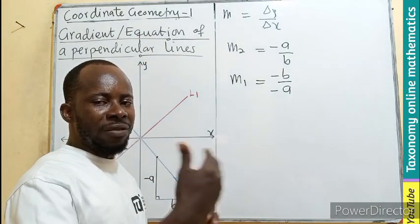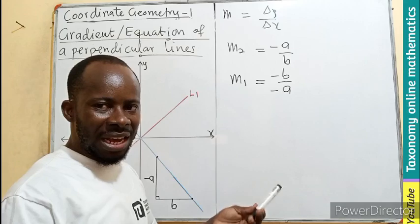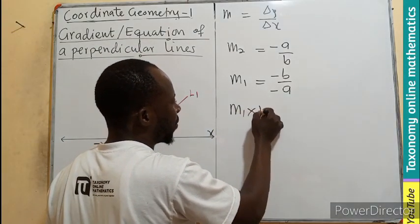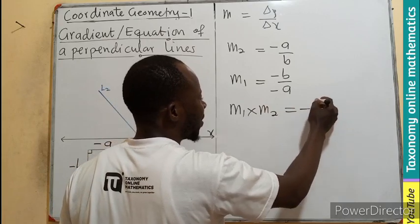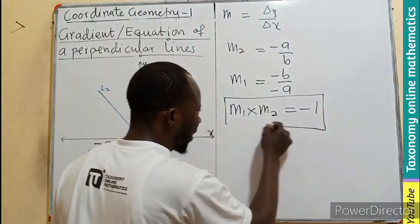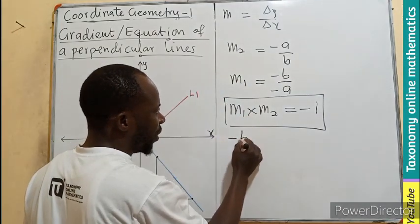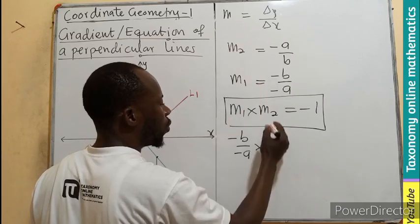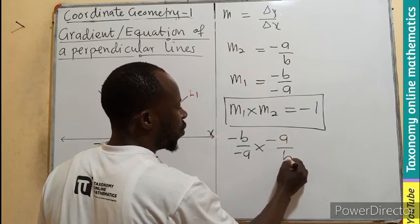So, we are still on course based on the definition of the previous episode. Now, back to what we know. Product of their gradient give us negative 1. So, we are having gradient 1 times gradient 2 must give us a negative 1. That is what we want to prove. So, let's check.